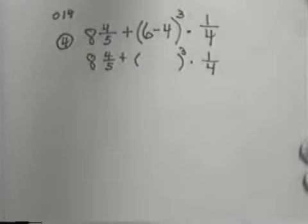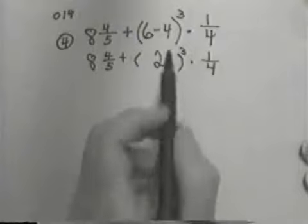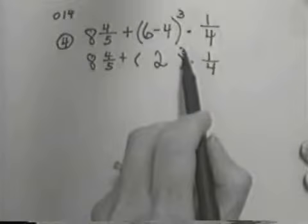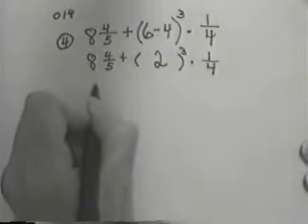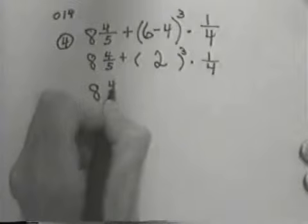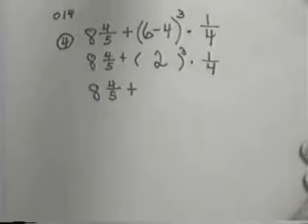And what we're going to do is do what's in the parentheses. Well, we can certainly do 6 minus 4 and just put our answer as 2. So now we've done our parentheses and we're ready. Next, to follow our second rule which says to do exponents. So we're going to write everything else down the same. 8 and 4/5 plus.